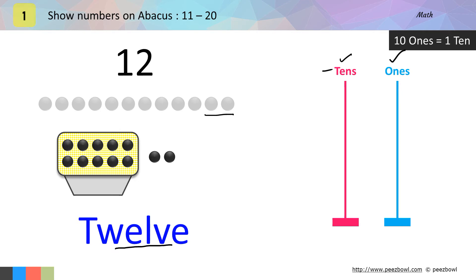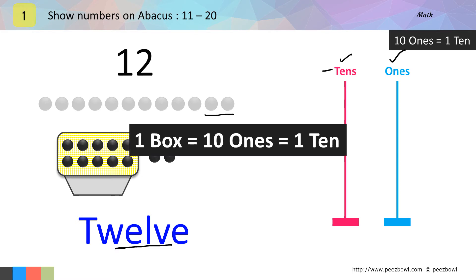Now the counting starts. There are 10 balls in this box. As you already know that 10 ones are nothing but 1 ten. That means 1 box is equal to 1 ten.